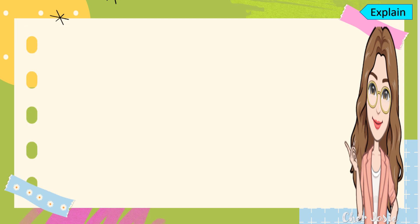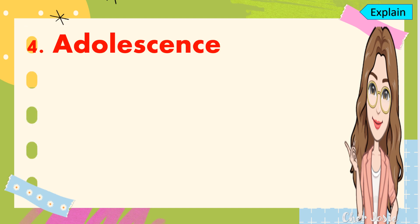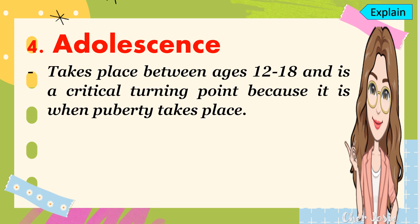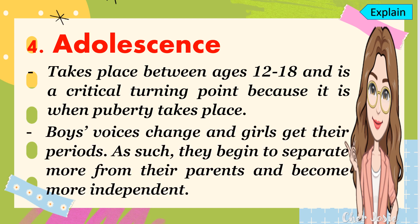The fourth stage is the adolescence stage. It takes place between ages 12 to 18, and it is a critical turning point because it is where puberty takes place. Puberty is the time when boys' voices change and girls get their periods. They begin to separate more from their parents and become more independent.